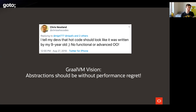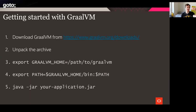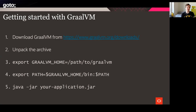GraalVM makes this much closer to reality. It's fairly easy to check it out. To get started with GraalVM, go to the downloads page at graalvm.org/download, download the archive, unpack it, put GraalVM on the path — which is what you do with any JDK distribution nowadays — export GRAALVM_HOME, and you can also point JAVA_HOME to the same directory. Then you run your application normally using the Java utility, which will be in the main directory of GraalVM.